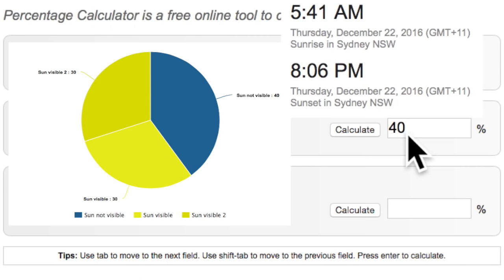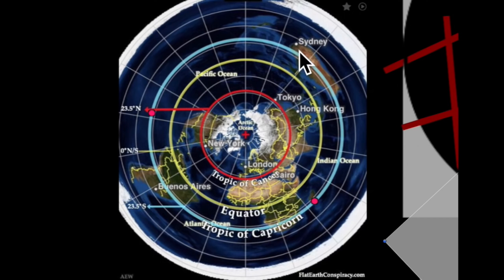40% of the time it wouldn't be visible. So this is Sydney on the concept flat Earth map, and around here you have the pathway of the Sun around December 22nd. As we have worked out, we can see the Sun in Sydney for around 60% of the day.